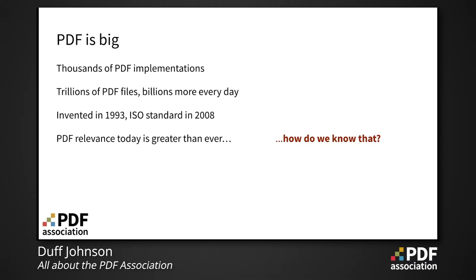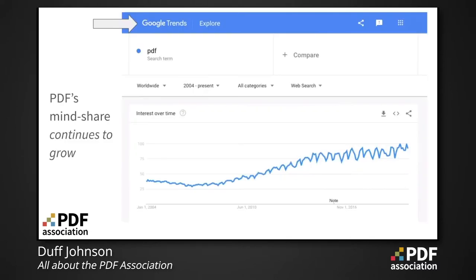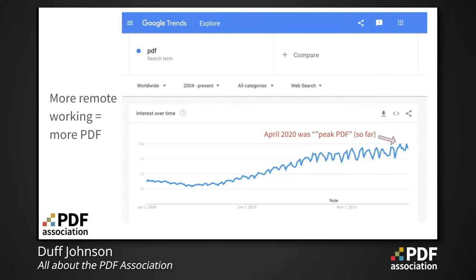How do we know that PDF is truly more relevant today than ever? We ask Google. If we look at Google Trends, which tracks mindshare by comparing searches for a given term against all searches everywhere, we learn some pretty interesting things. PDF is a pretty unique string of characters — if people search for 'PDF' it's very likely they have a PDF file in mind. As we can see from this graph, interest in PDF continues to grow. In fact 2020 saw a new peak, as the worldwide surge in remote working resulted in a spike in interest in PDF documents and PDF technology.